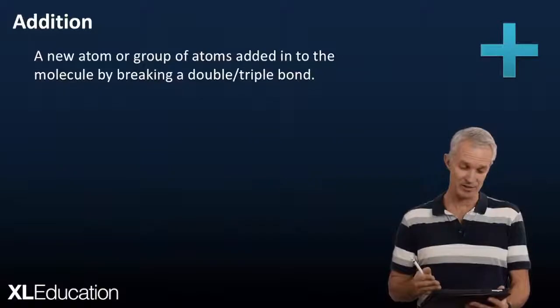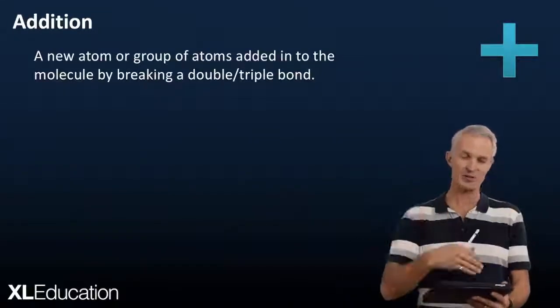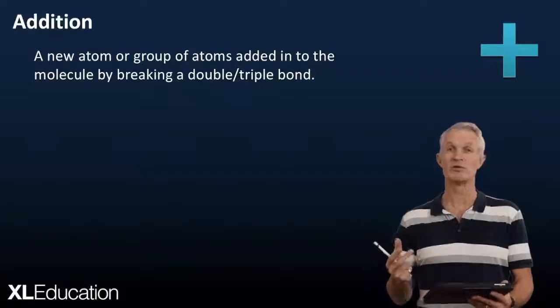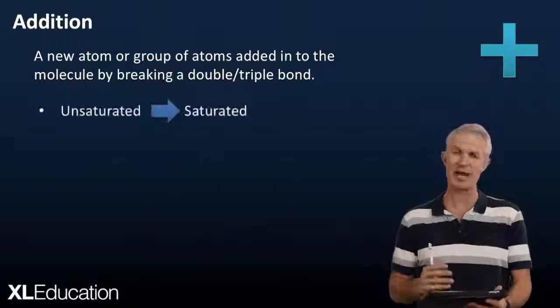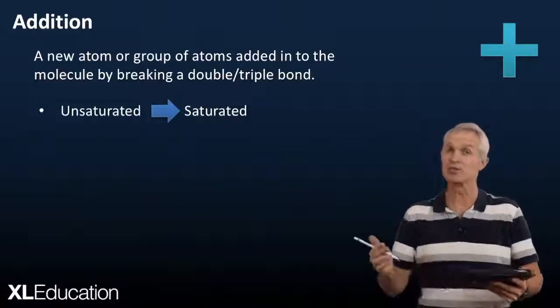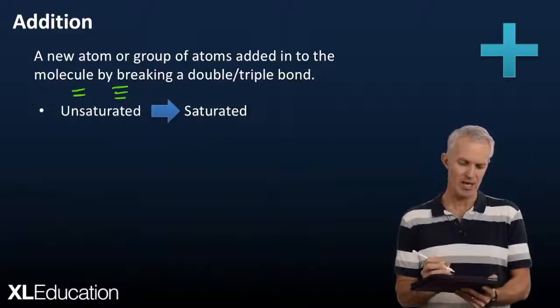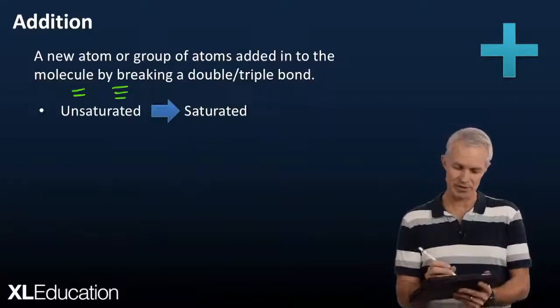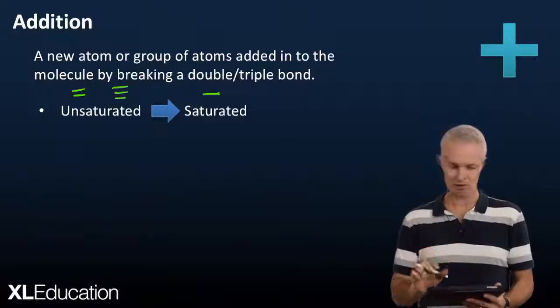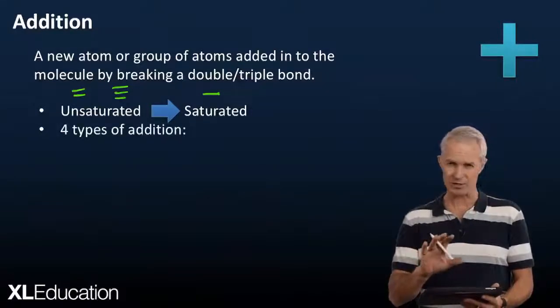That's combustion — the main thing to remember is that organic compounds are often used as fuels because they release a lot of energy in an exothermic reaction. Moving on to addition. Addition is where a new atom or group of atoms is added into the molecule by breaking a double or triple bond. This takes an unsaturated compound — one with a double or triple bond where there's still room to put things in — and converts it to a saturated compound with only single bonds.